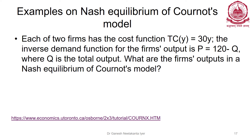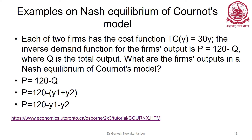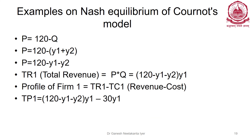Now let's find the equilibrium in the Cournot model, and similarly in the Stackelberg model. Assume a cost function TC(y) = 30y and inverse demand function p = 120 − Q. Since Q = y1 + y2, we get p = 120 − y1 − y2. Total revenue is p times quantity, which gives (120 − y1 − y2) × y1 for the first player. Profit for firm one equals total revenue minus cost.